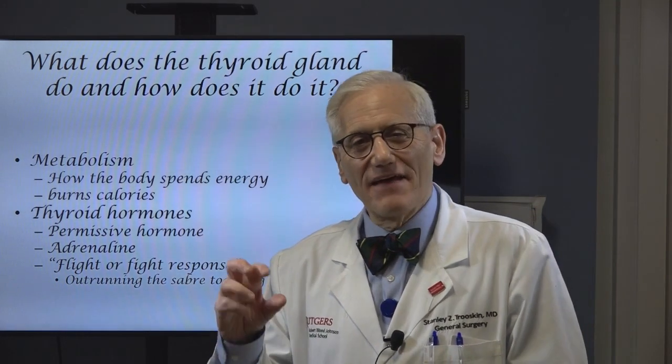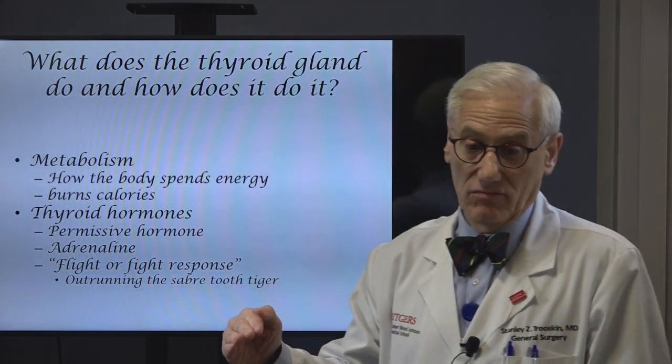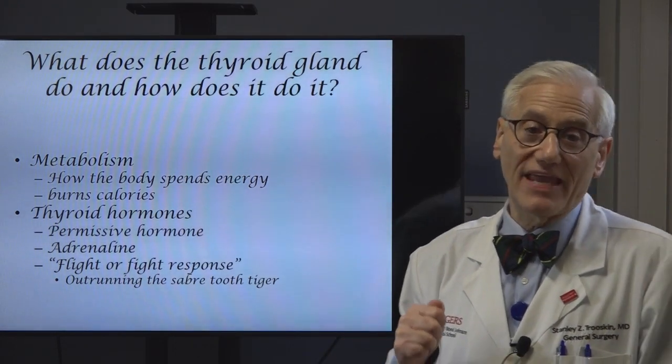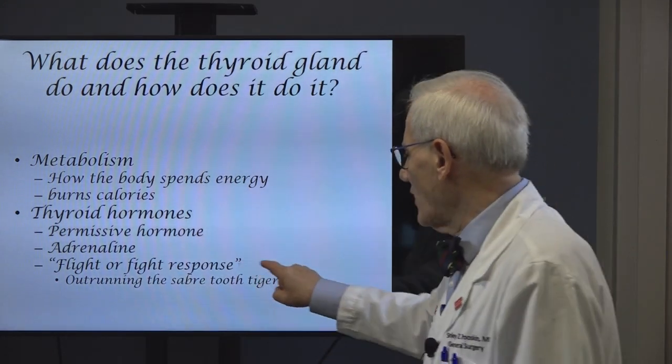How your body burns calories day to day, week to week, is controlled by the amount of hormone levels made by your thyroid gland. Thyroid hormones have what's called a permissive relationship on metabolism. If you have the right amount of thyroid hormone in the blood day after day, you're not going to gain or lose weight related to how you burn calories. The calories that have the direct effect on how you burn glucose and fats minute to minute are made by the adrenal glands that sit on top of the kidneys. They make adrenaline.